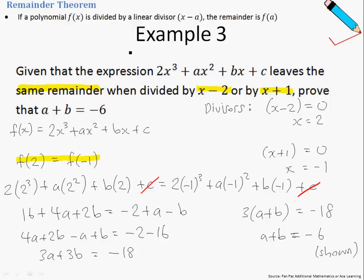Just take note that for example 3, the key thing here is that when the remainders are the same, we can equate the functions using this given relationship.